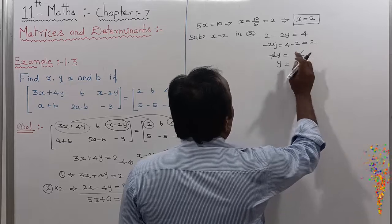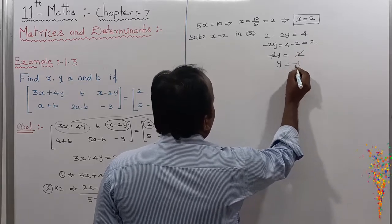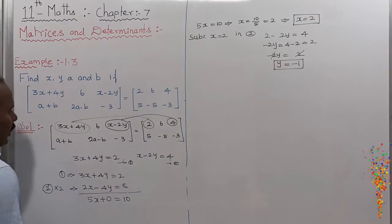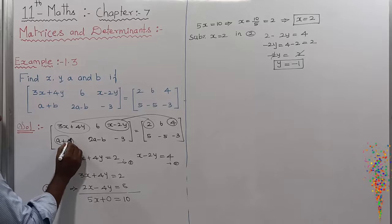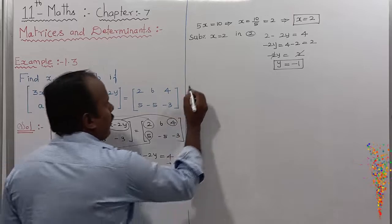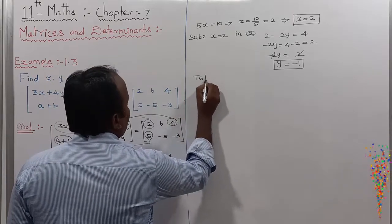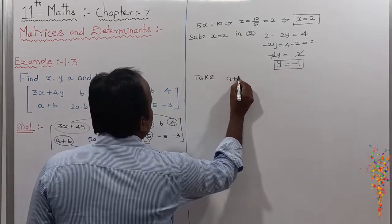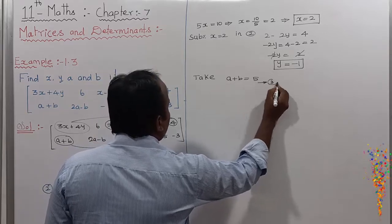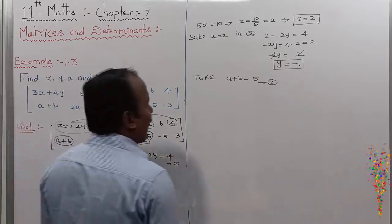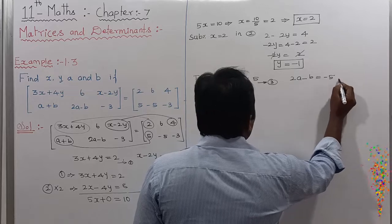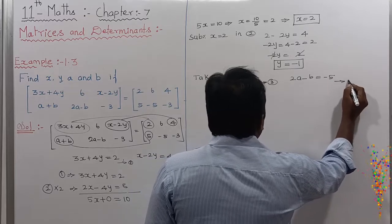The 2s cancel and the negatives cancel, giving Y equals minus 1. This is the Y value. Next, to find the A value: A is the second row, first element. So A plus B equals 5. This is equation number 3. The second row second element gives: 2A minus B equals minus 5. This is equation number 4.